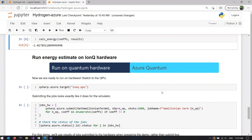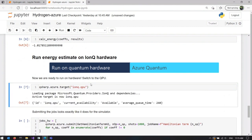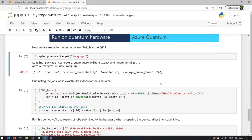Now let's see the jobs executed on IonQ hardware. And submitting to hardware is as easy as just switching the target for our jobs from IonQ simulator to IonQ QPU.